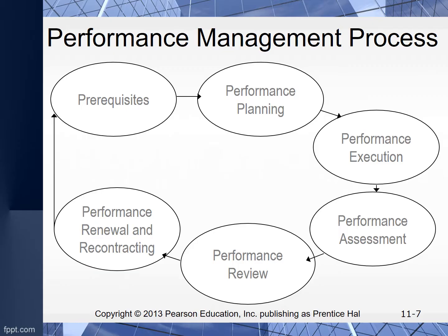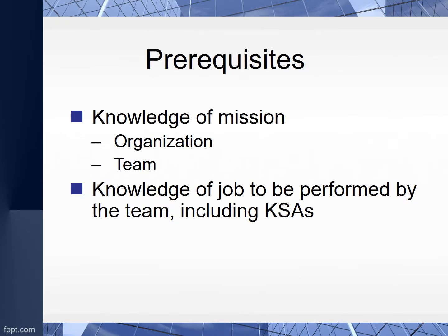The performance management system process itself starts with prerequisites. That first step is knowledge of the mission — both organizational and team — and knowledge of the job to be performed by the team, including the knowledge, skills, abilities, and other requirements necessary. This also means understanding the tasks contextually, understanding communications, decision-making, collaboration, and what the key objectives and principles are.